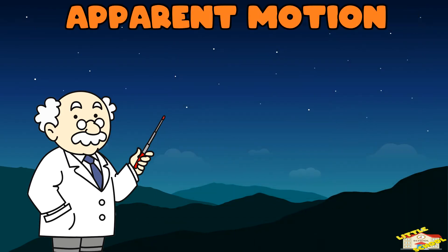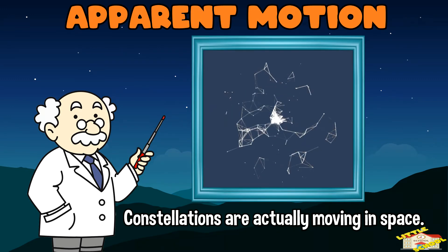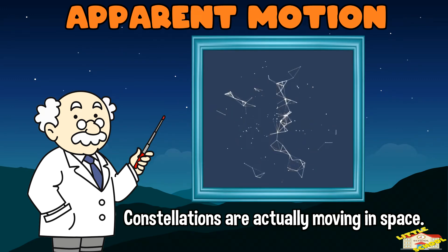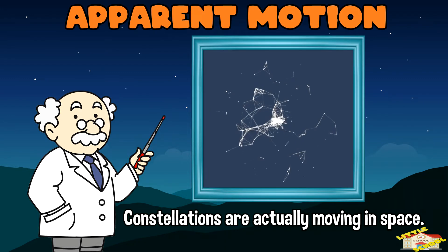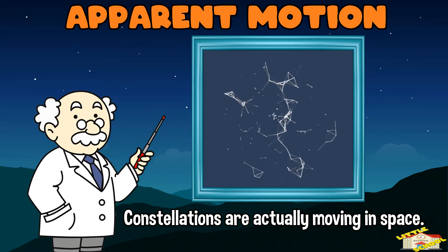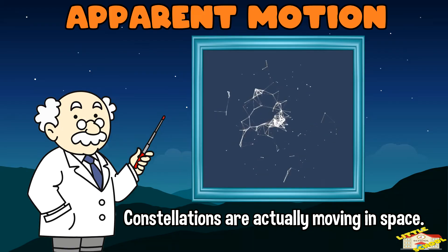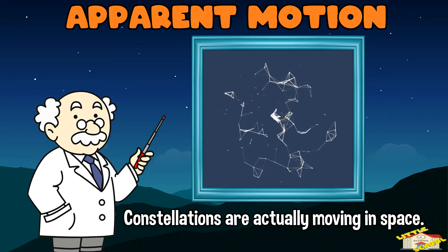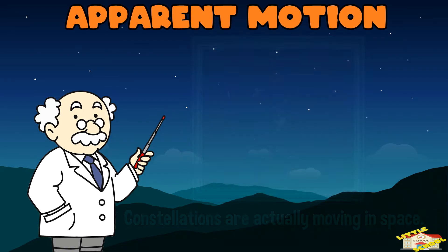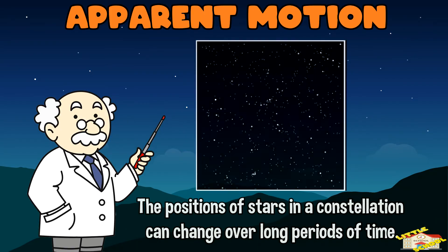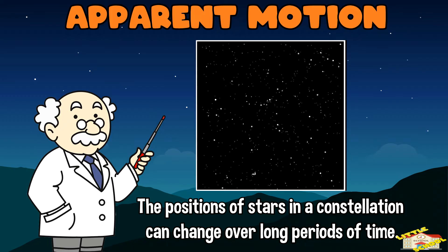Apparent motion: the stars and constellations may seem fixed relative to each other, but they are actually moving in space. The relative positions of stars in a constellation can change over long periods of time.